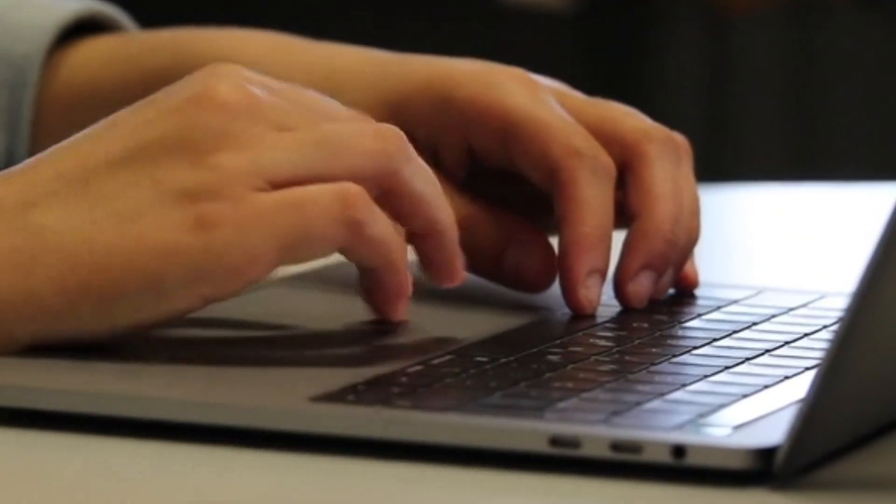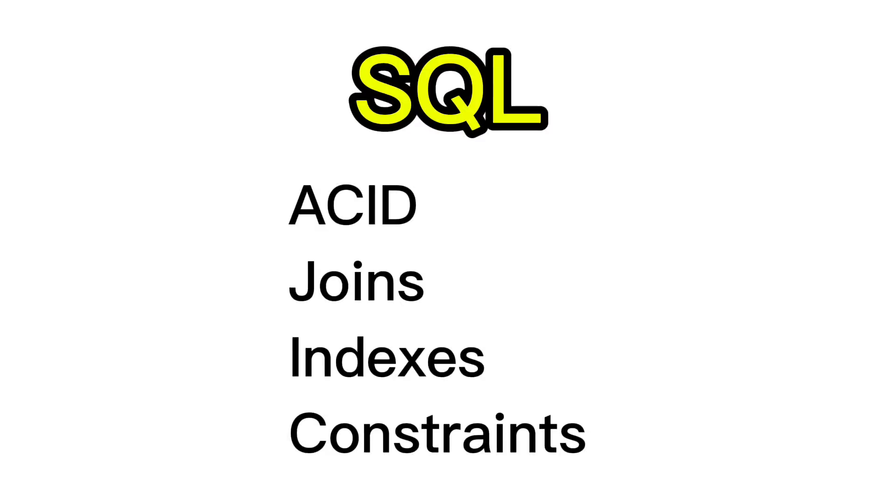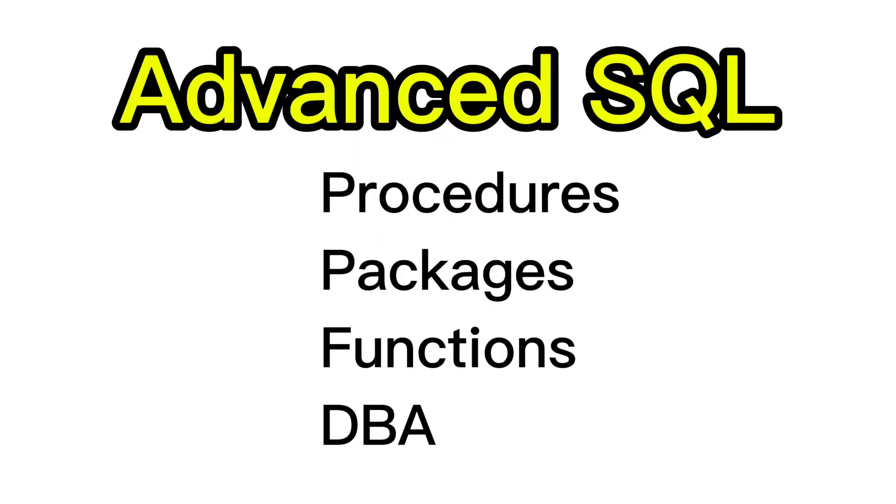Number 6 — Database. You can learn Java, build an application, create a server, and then save data in the back end — that's why you need a database. Topics to learn include SQL, ACID properties, joins, indexes, transactions, advanced SQL, stored procedures, packages, functions, and DBA concepts. For NoSQL, learn MongoDB.